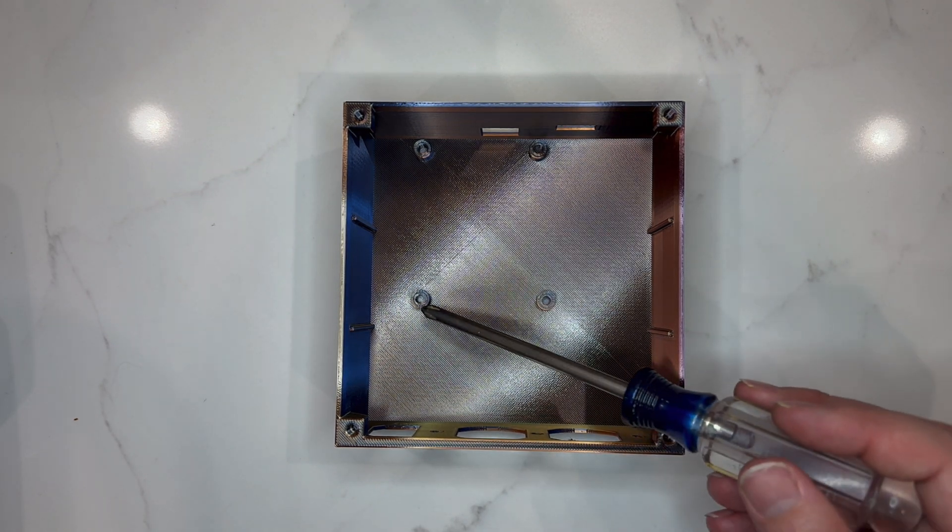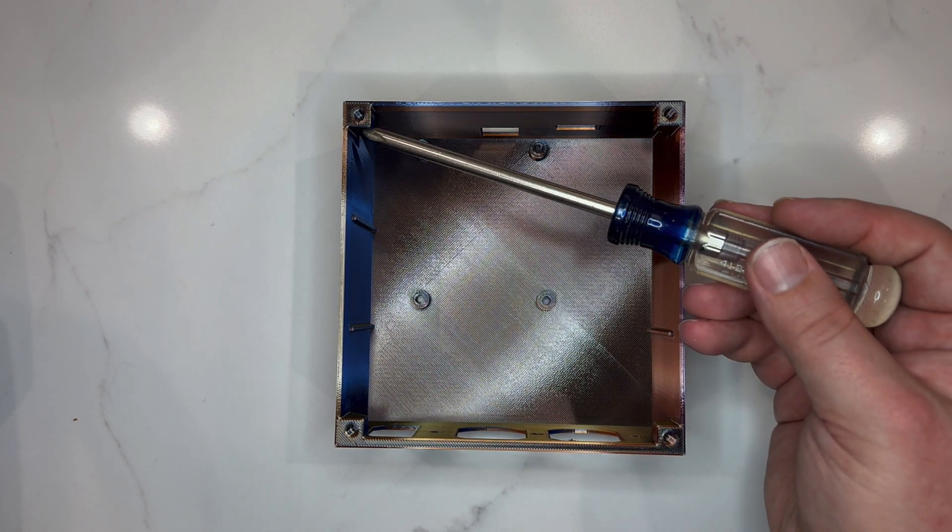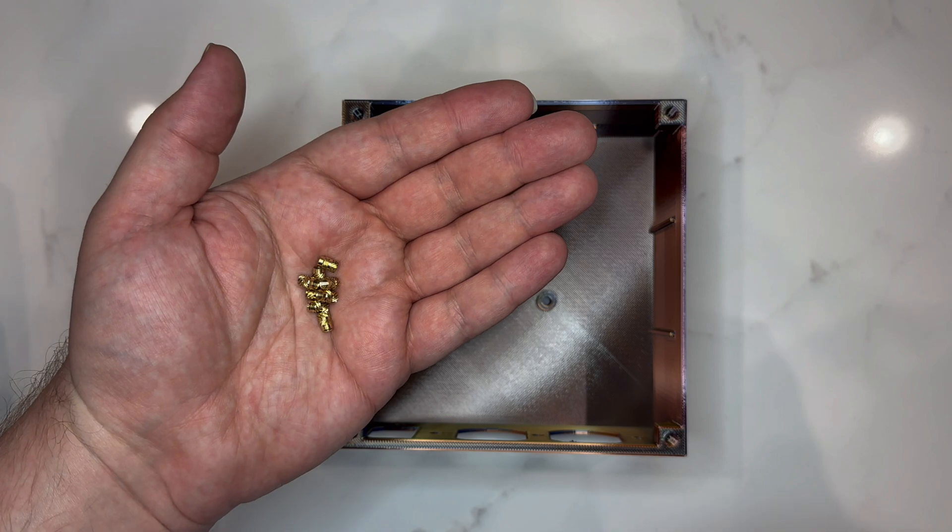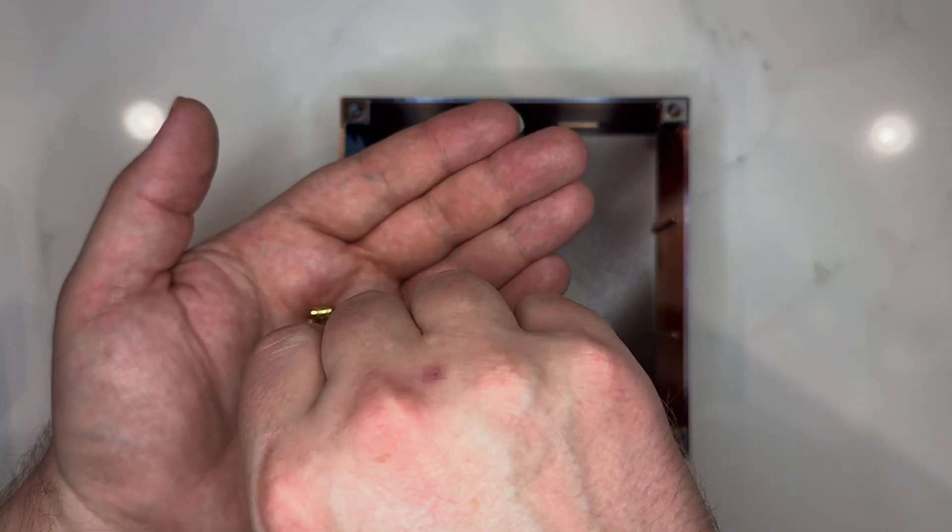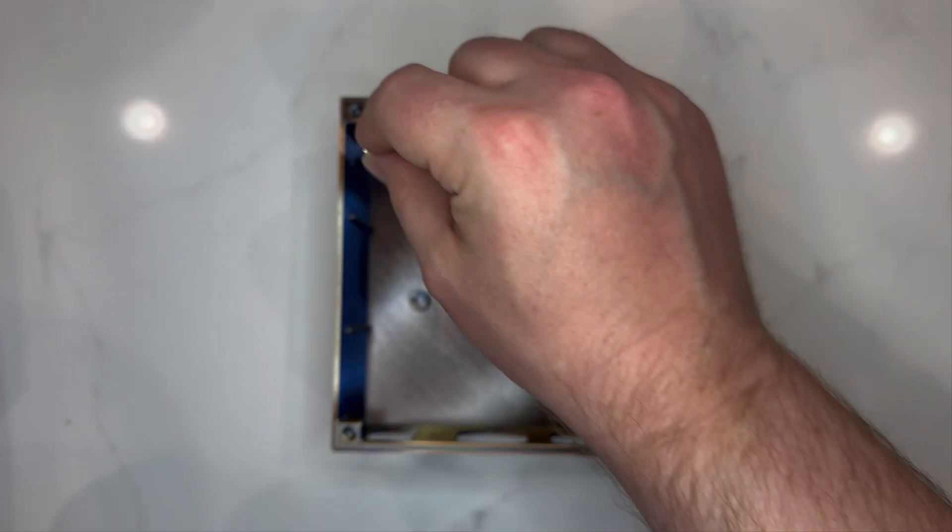Once your case is printed, all you need to do before assembly is add the heat set inserts. Take eight heat set inserts and place them, smooth side down, in each of the holes in the case.